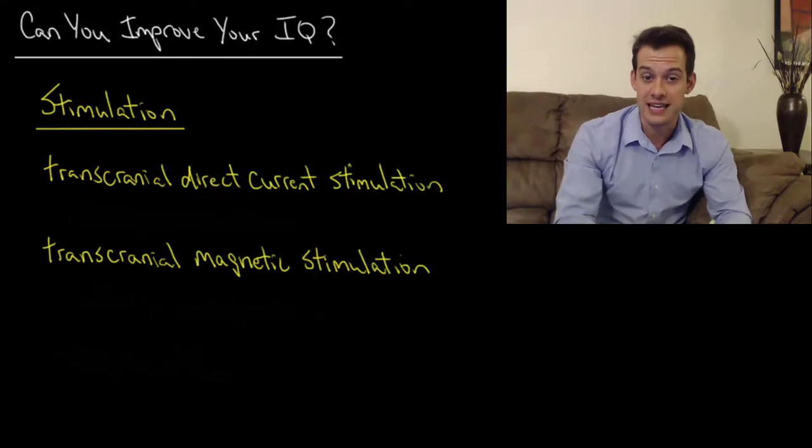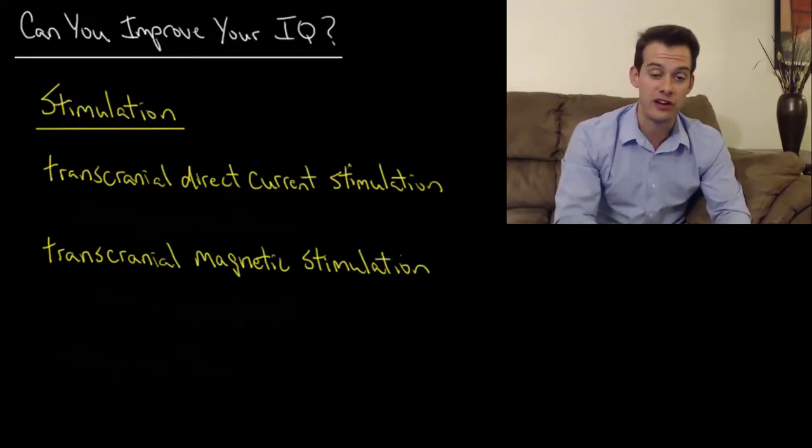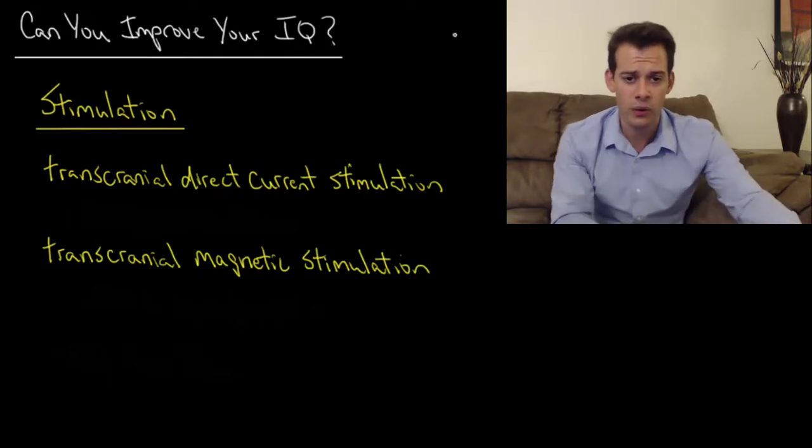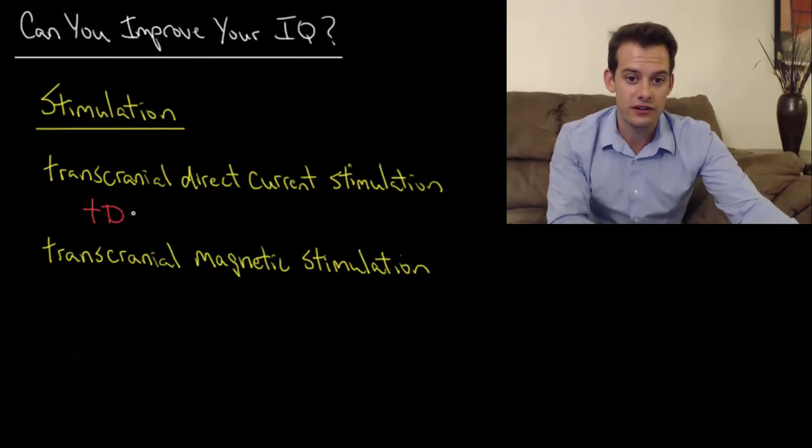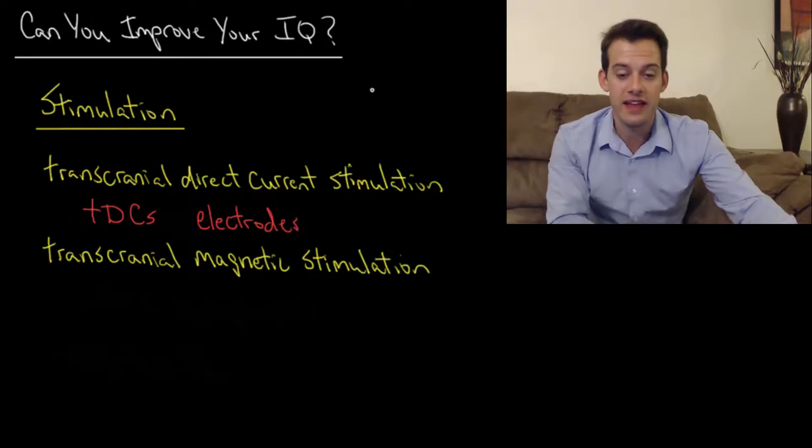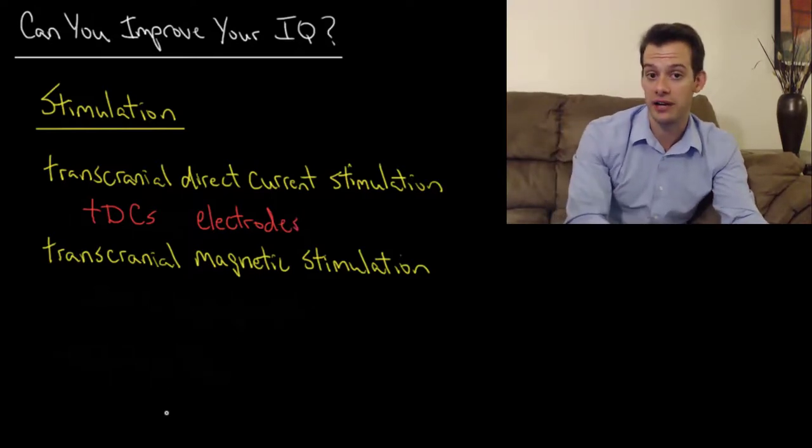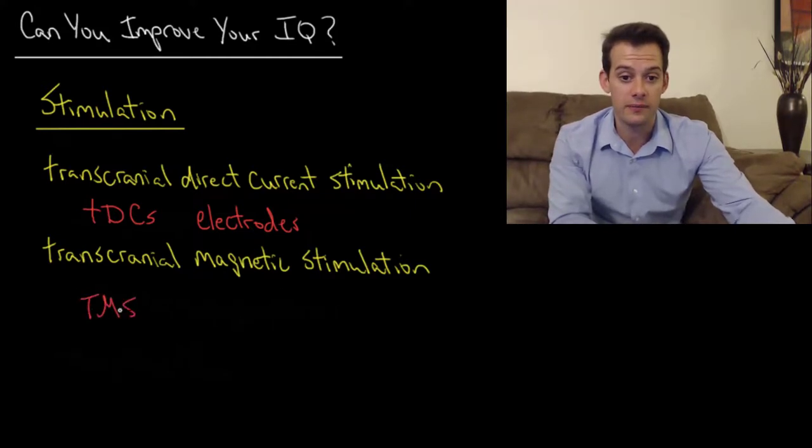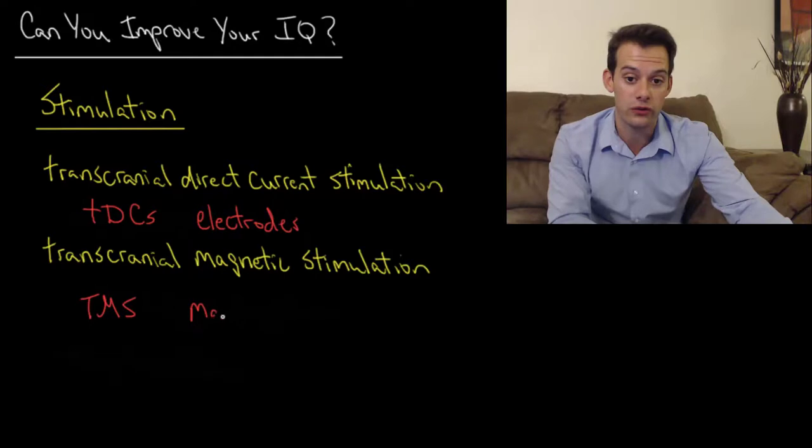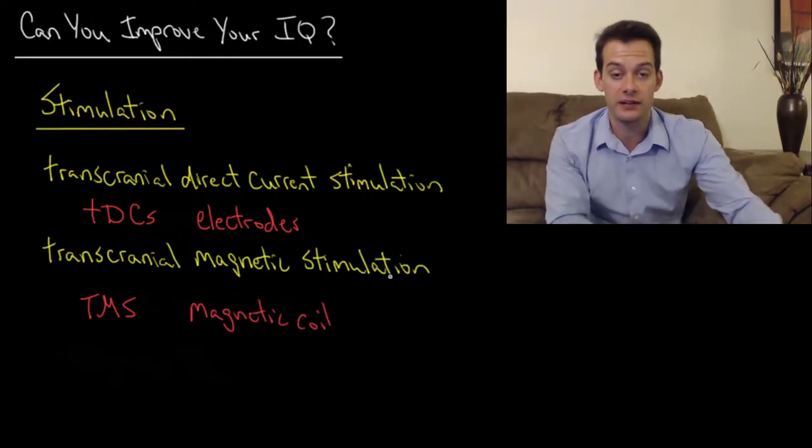Now the first of these is stimulation of the brain. This is relatively new and there's two main types of stimulation that have been used: transcranial direct current stimulation and transcranial magnetic stimulation. In TDCS, this direct current stimulation, electrodes are placed on the scalp and these then stimulate brain regions underneath. And in transcranial magnetic stimulation, the stimulation comes from a magnetic coil. So it looks sort of like a wand that's held over the skull and this can then stimulate the brain underneath.